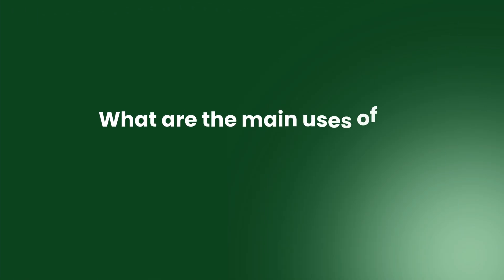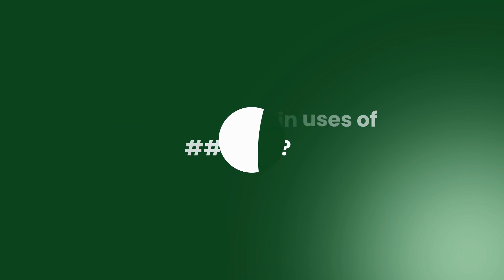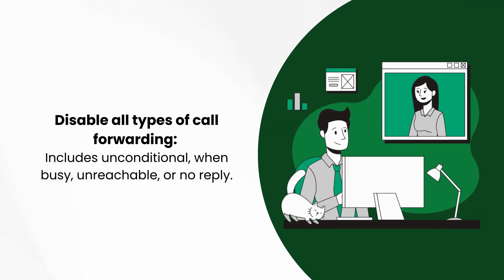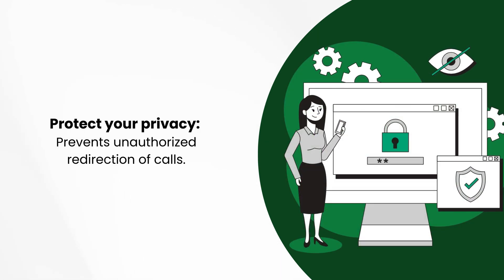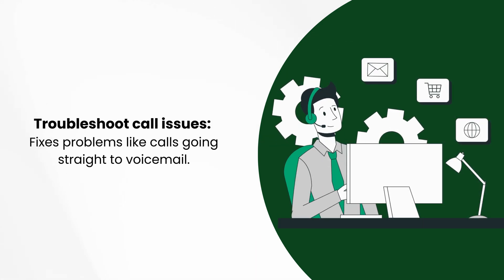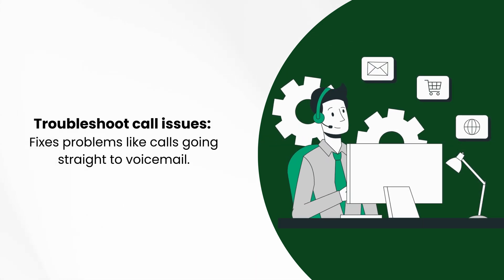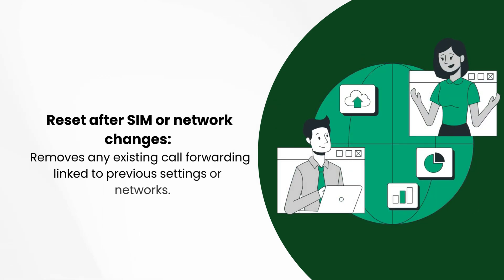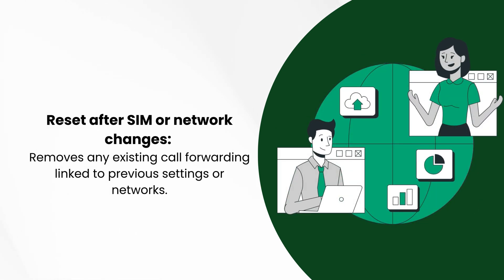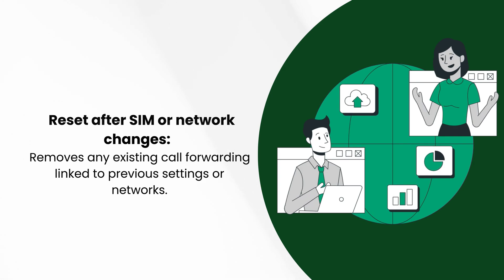What are the main uses of ##002#? It disables all types of call forwarding — including unconditional, when busy, unreachable, or no reply. It protects your privacy by preventing unauthorized redirection of calls, troubleshoots call issues like calls going straight to voicemail, and resets forwarding after SIM or network changes.